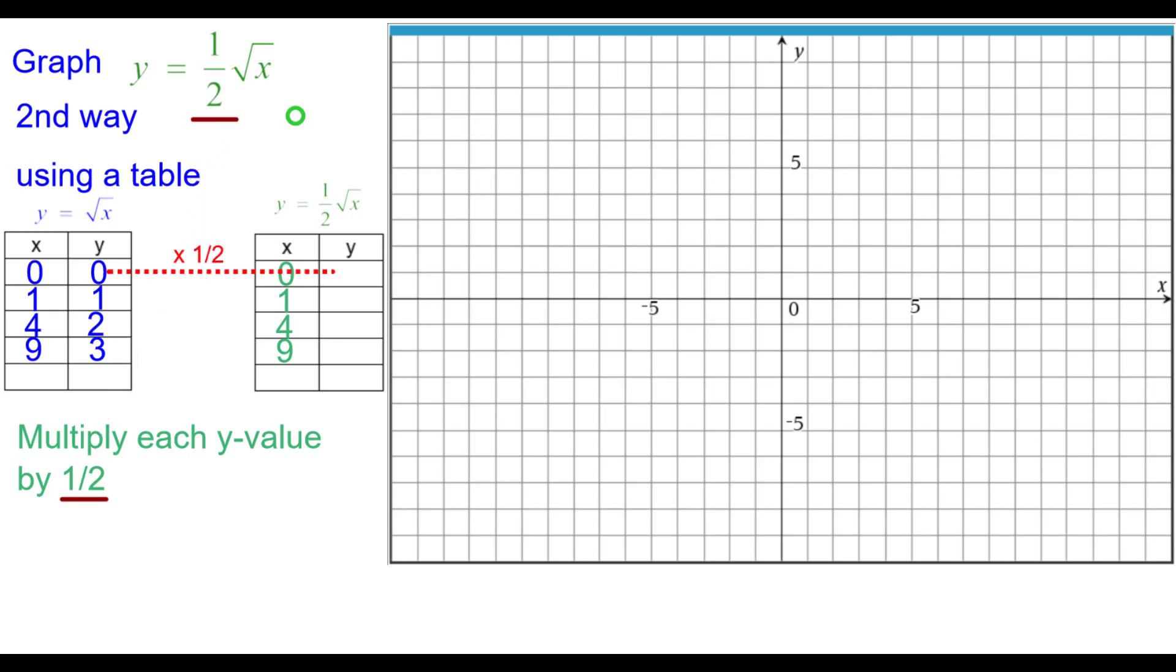So 0 times a half is 0 so the origin is on the graph. 1 times a half is a half so 1 comma a half. Go ahead and finish these last two points and graph them and then pause to do this and resume when you're ready.